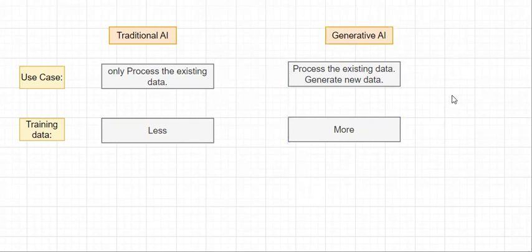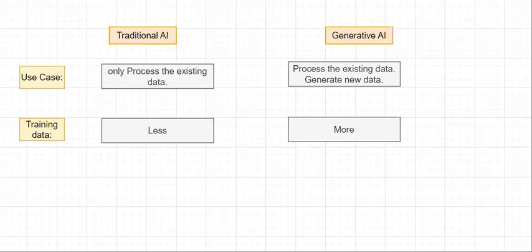For a real-time example, take ChatGPT. The older version from 2021 was trained with 500+ GB of data. That's why ChatGPT can generate content for us — it was trained on a huge amount of data, essentially the equivalent of the entire search engine's data. That's why we get such accurate results from that Generative AI model. The training data for Generative AI is very large compared to Traditional AI.